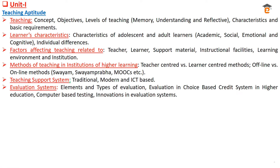UGC NET Paper 1 is divided into 10 units. The first unit is Teaching Aptitude — Shikshak Yogyata — which covers teaching concepts, objectives, and levels of teaching. It also includes characteristics of learners, including adult learners and children.